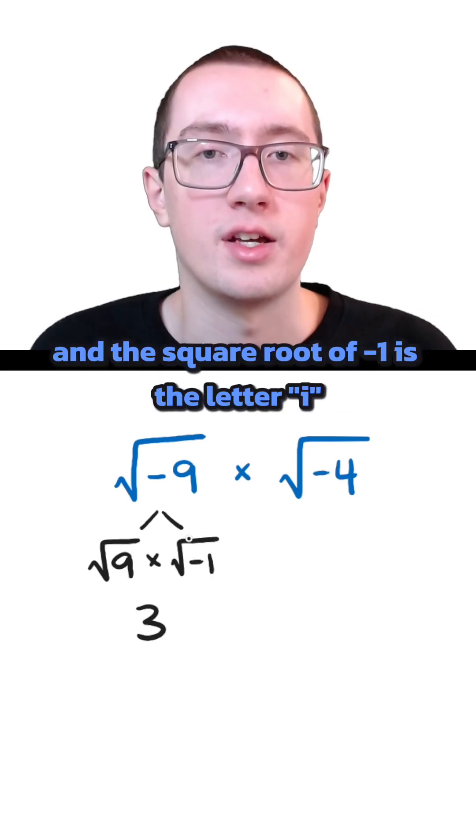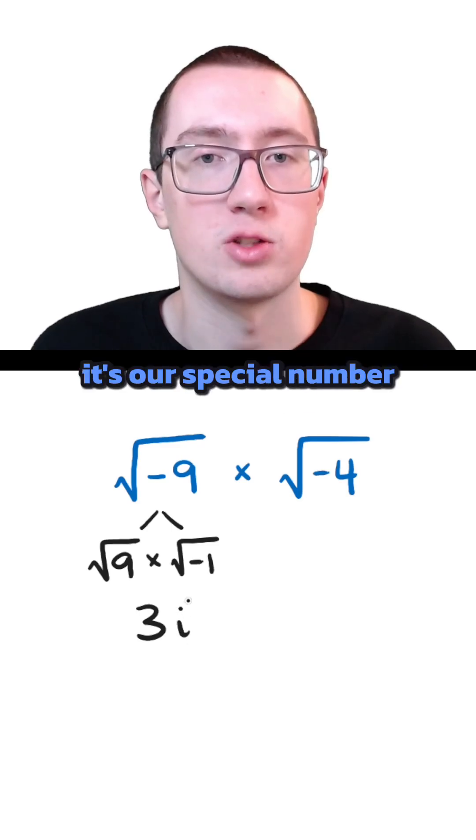The square root of 9 is 3, and the square root of negative 1 is the letter i. It's our special number.